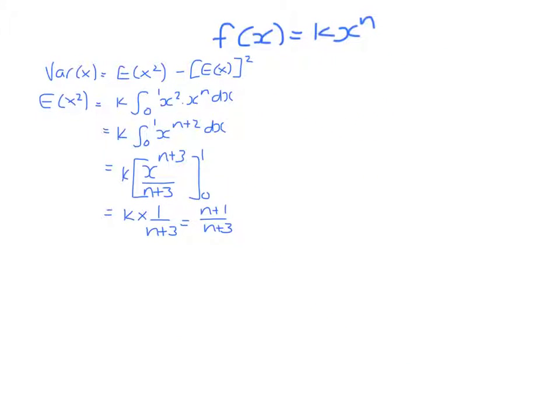Finally, to work out the variance, take the expectation of x squared and subtract the expectation of x all squared. I'm not going to simplify this fraction, we'll leave this in this form, and you can see that they accepted that on the mark scheme.